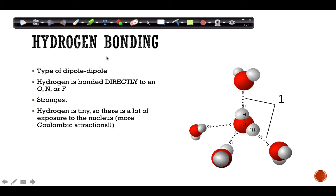Hydrogen bonding is a special type of dipole-dipole interaction that occurs when a hydrogen is bonded directly to O, N, or F. Because hydrogen has only one proton and one electron, when it is bonded to something highly electronegative like those three atoms, it creates a very strong dipole. Hydrogen bonding is the strongest of the three types of intermolecular forces.